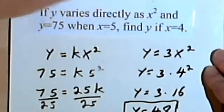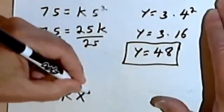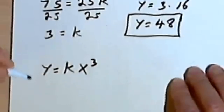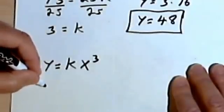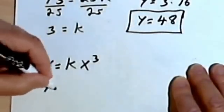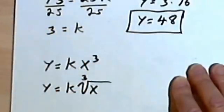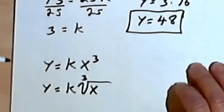If it was x cubed, we'd put y equals k x to the third. You could even have y is directly proportional to the cube root of x. So y equals k times the cube root of x, or the square root of x. This would just be a square root.